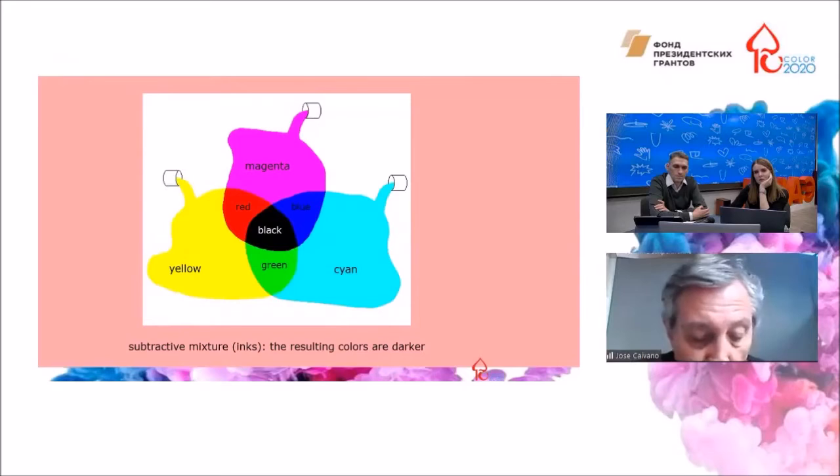Subtractive mixture produces colors that are darker than the original colors. For example, in the typical subtractive mixture of yellow, magenta, and cyan, red is darker than yellow and magenta, blue is darker than magenta and cyan, green is darker than cyan and yellow, and finally black is darker than all of them.